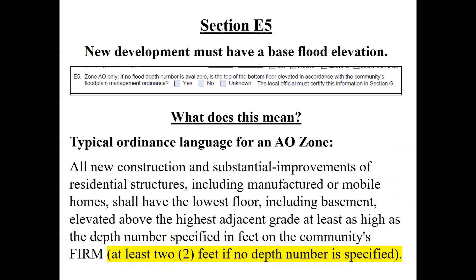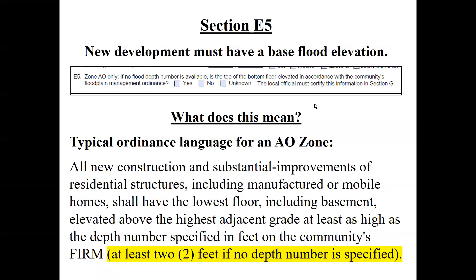For Zone AO with no flood depth specified, here's typical language from community ordinances — highlighted in yellow: use at least two feet if no depth number is specified on the map. I personally dislike AO zones, and as part of our new flood mapping projects we're trying to get rid of as many as we can. There will only be about a half dozen left in Kansas by the end of this year.